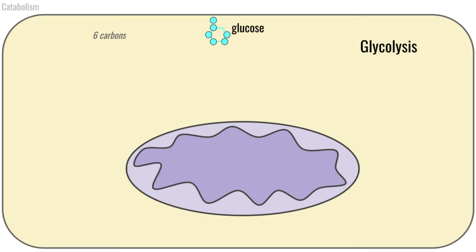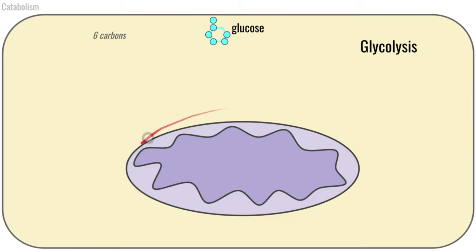We are going to start off up here. This is our cell. This is the outside of the cell — the phospholipid bilayer that makes the cell membrane. This yellow region is the cytosol. And then of course, we have our mitochondria down here with its outer membrane, with its inner membrane, the mitochondrial matrix, and the intermembrane space.